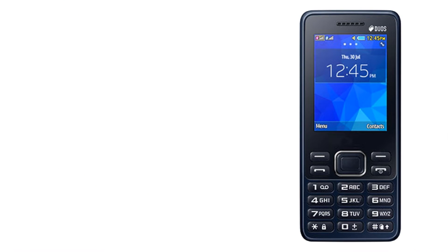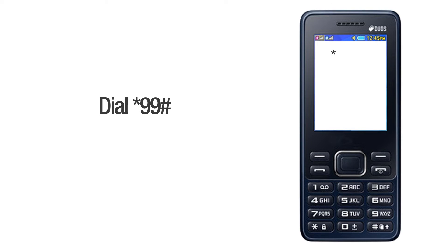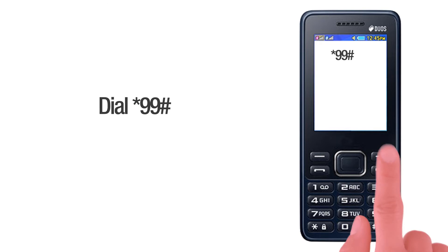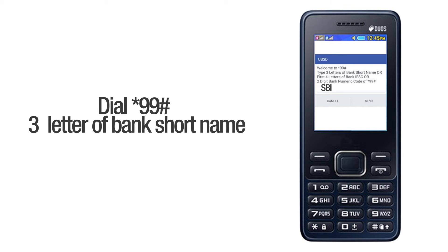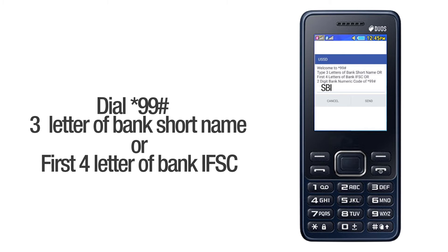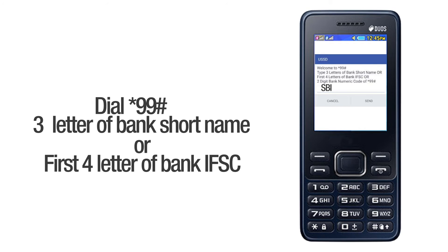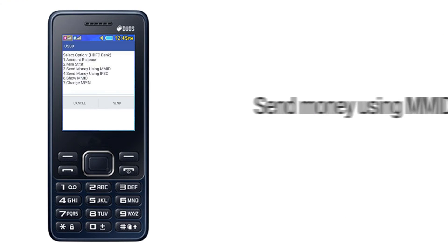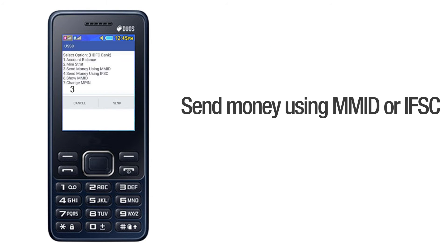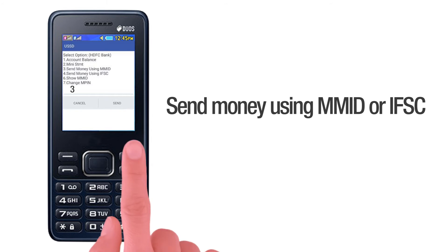Follow the steps to find out. Dial star 99 hash from your phone. Type 3 letters of the bank short name or the first 4 letters of the bank IFSC. Click on the Send button.